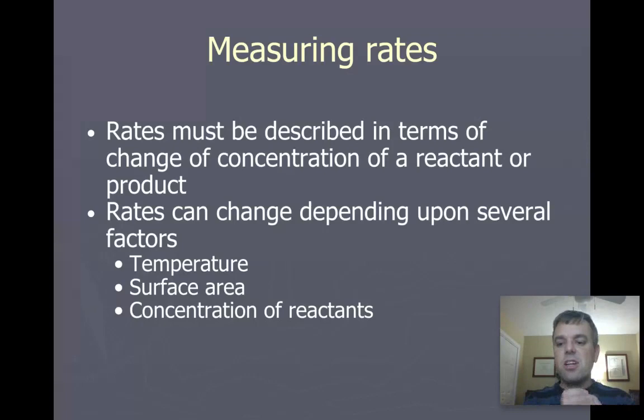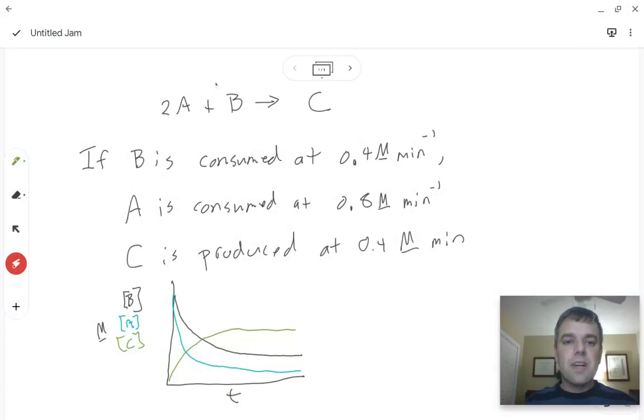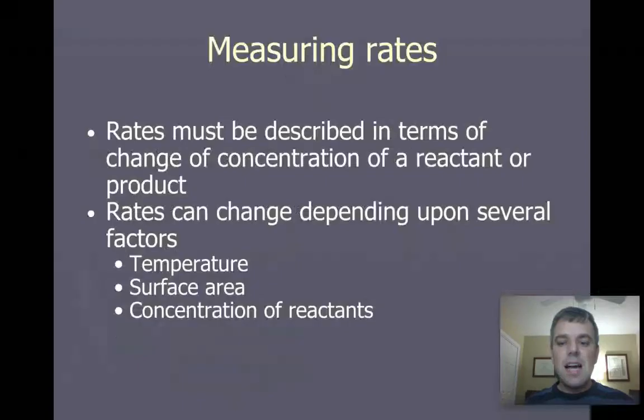Surface area, if you increase the surface area by taking a large, chunky solid and you grind it up into a powder, the reaction will happen faster because the particles can physically interact. We'll talk about collision theory later. The particles have to physically contact each other. The A's and the B's in this reaction have to physically come into contact with each other to make the reaction happen.